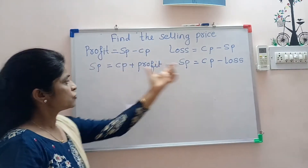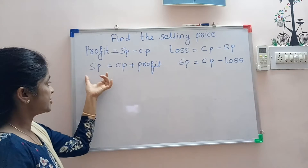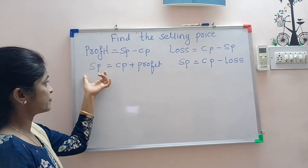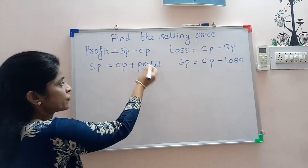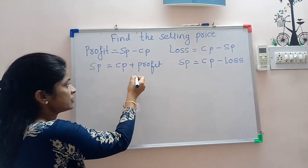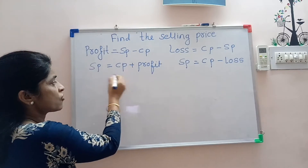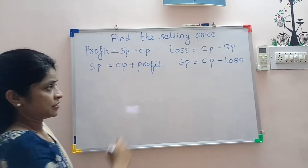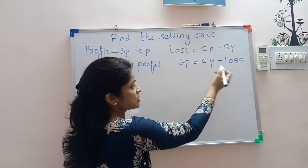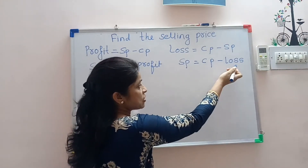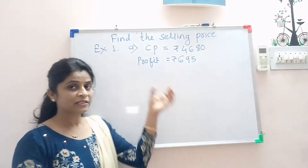These are the two formulas for finding out the selling price. If a profit is given, you have to add the profit to the cost price. If loss is given, you have to subtract the loss from the cost price.